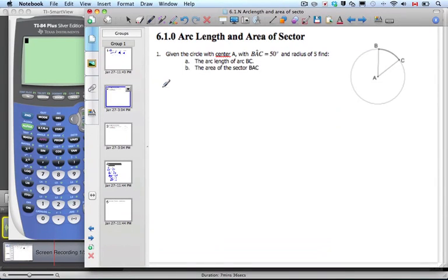Hi there, it's Mrs. Flynn and Mr. Rops and we're going to look at area of a sector. So part B here, if we're given the circle again with center A and angle BAC being 50 degrees with a radius of 5, now we have to find the area of sector BAC. So now we're looking for this whole shaded region.